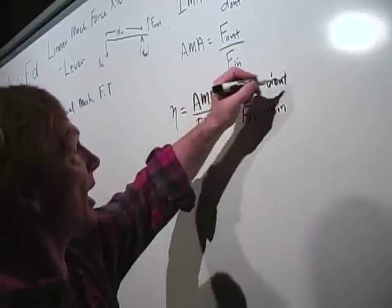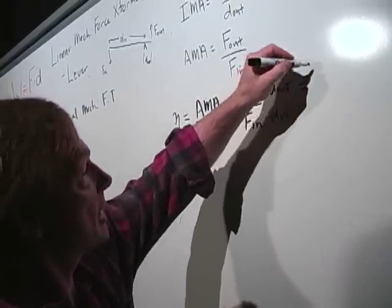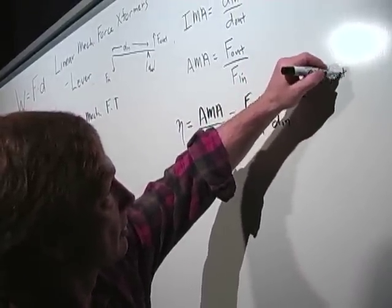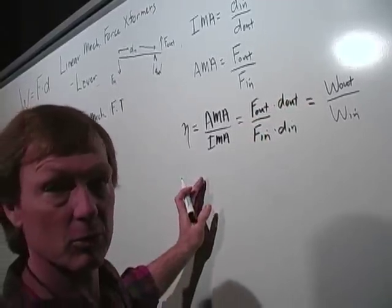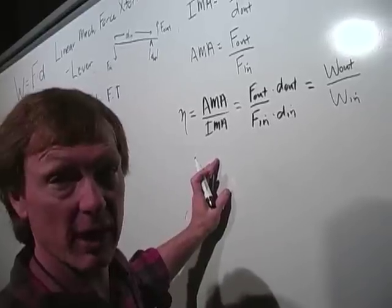And look what I got. F out times D out. I got work out over F in times D in, work in. I wind up with the same rules or the same formula for efficiency we've had before.